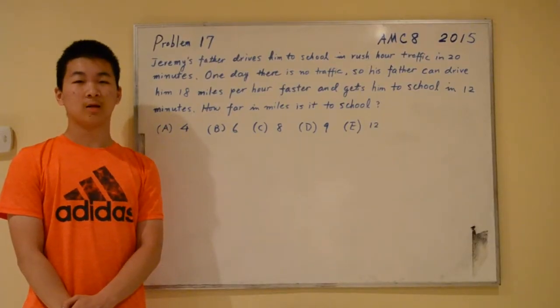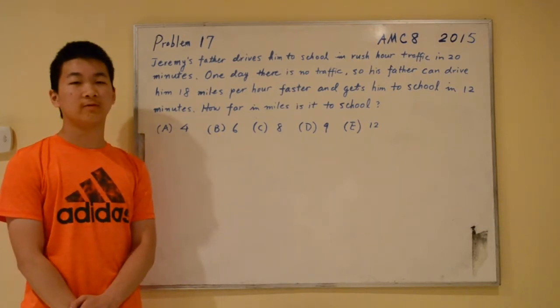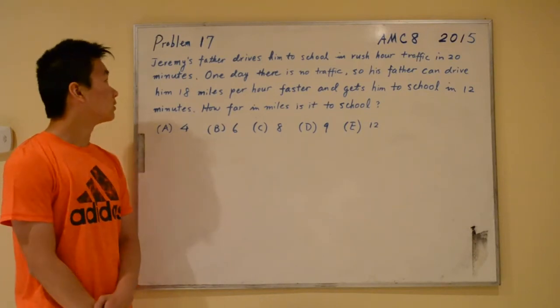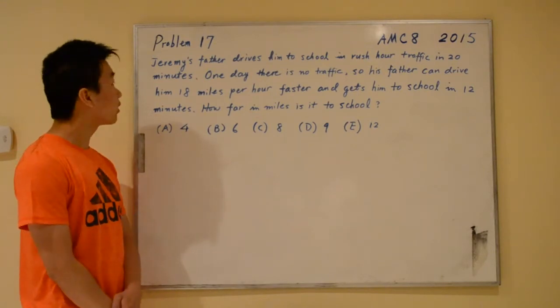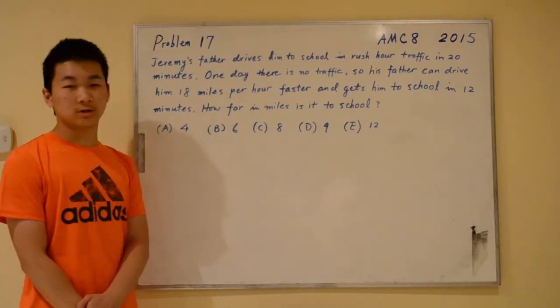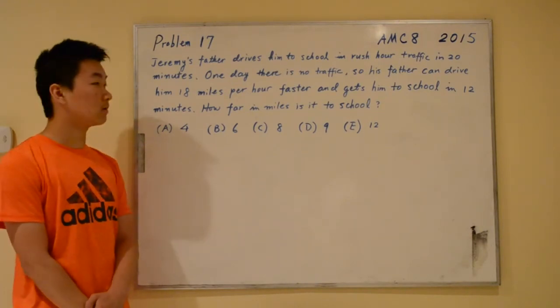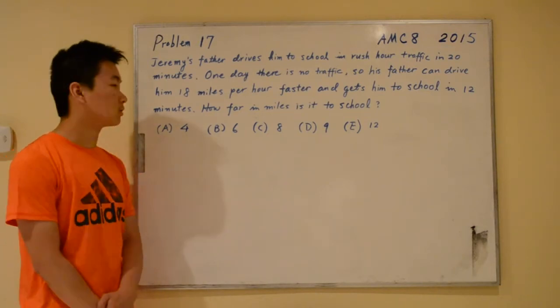Hi, I'm Oliver Chang and today I'll be showing you how to solve problem number 17 from the 2015 AMC 8. The problem reads: Jeremy's father drives him to school in rush hour traffic in 20 minutes. One day, there is no traffic so his father can drive him 18 miles per hour faster and get him to school in 12 minutes. How far in miles is it to school?